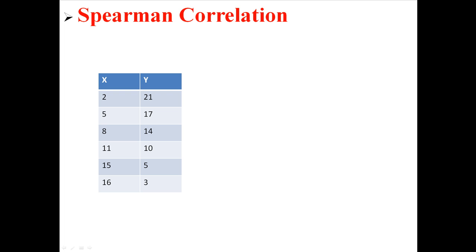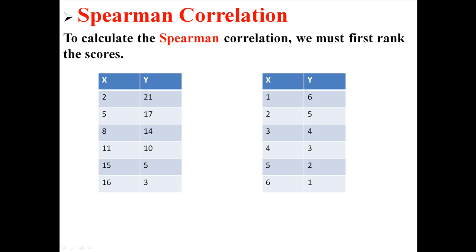So here is a sample data set. We've got some ordinal data here, six x's and six y's. Now what we need to do with the Spearman correlation is we must first rank the scores. So I'm going to replace the score with what rank it has. The lowest score has the lowest rank and the highest score has the highest rank.